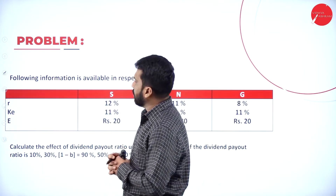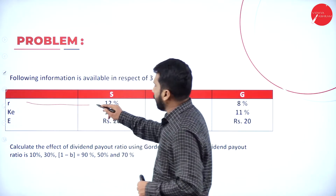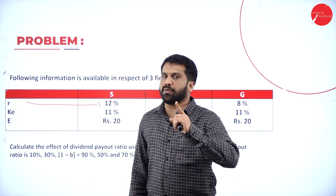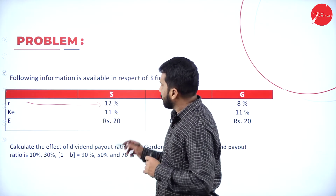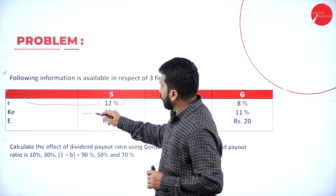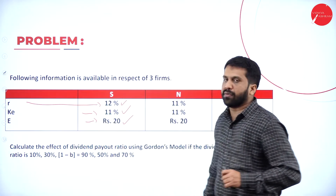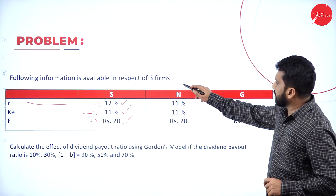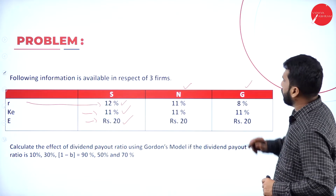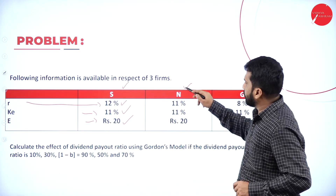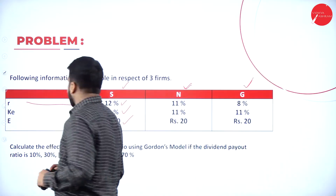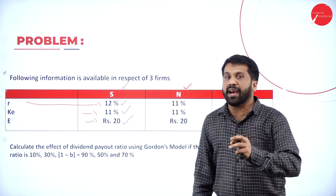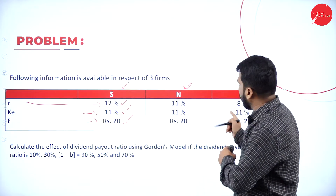As per this next problem, what changes? In the last problem, the rate of return was only one — 12%. But in this problem, we have three rates of return: 12%, 11%, and 20%. These correspond to firms S, N, and G respectively. We have to do the calculation for S, N, and G.